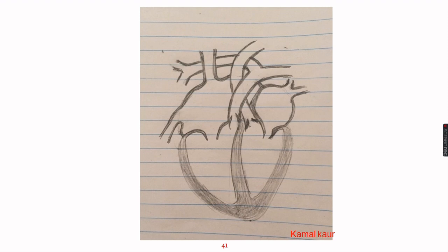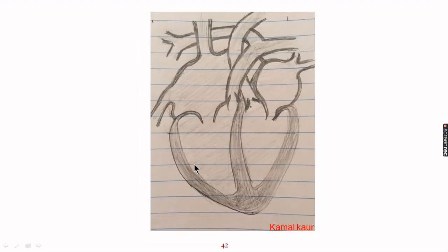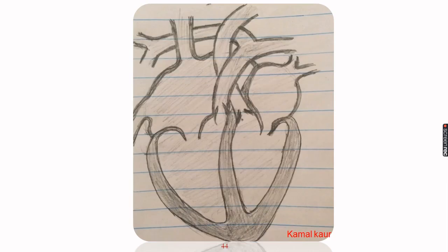The walls of the ventricles have become diffused, so to make them sharp we will again outline all the walls of the ventricles — now it is giving a better look. We will shade all the atria, ventricles, and blood vessels very lightly. This shading part is optional; if you do not have time during an exam you can skip it, but if you have time you must shade it very lightly.